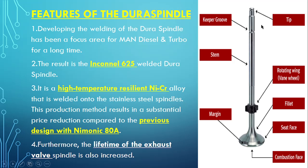Let's see the parts of the exhaust valve one by one. This is the tip, this is the keeper groove, this is the stem, this is the rotating vane, this is the fillet, this is the seat face, this is the combustion face, and this is the margin. The combustion face is subjected to combustion, the seat face is subjected to the seating surface, the fillet transitions from the valve to the stem, and the rotating vane helps rotate the exhaust valve. The stem is where the major changes have been made.